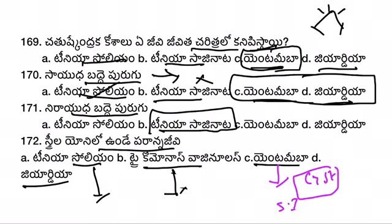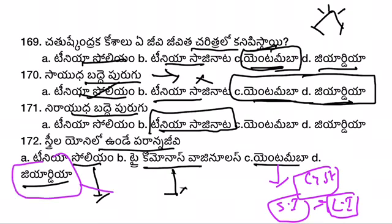After excystation, Giardia resides in the small intestine. Trichomonas vaginalis is found in the female reproductive organ and does not have a cyst stage.